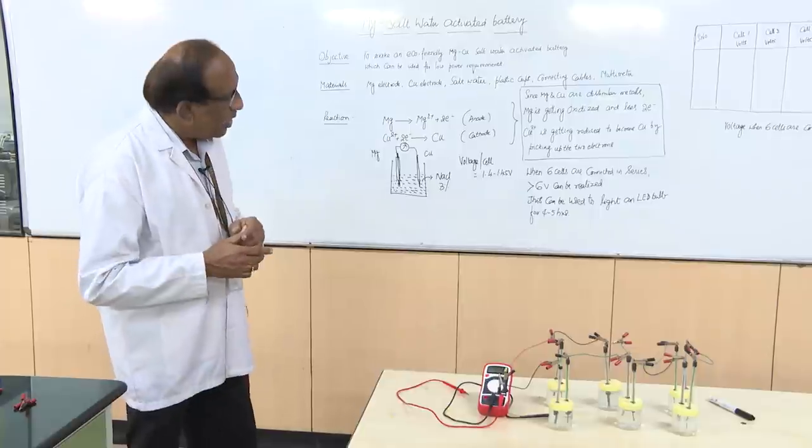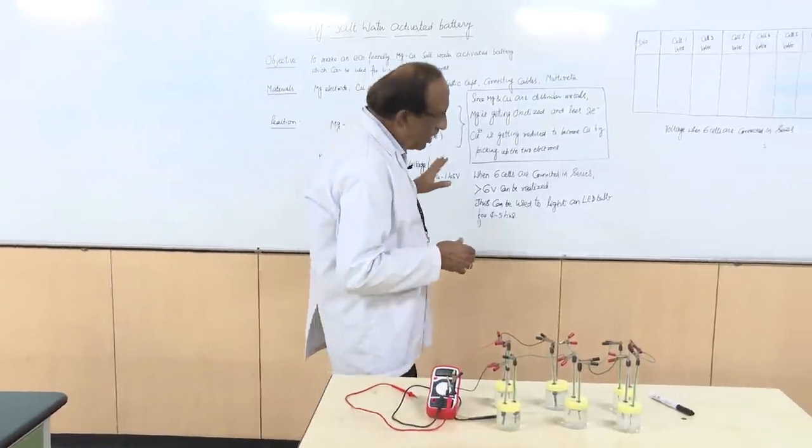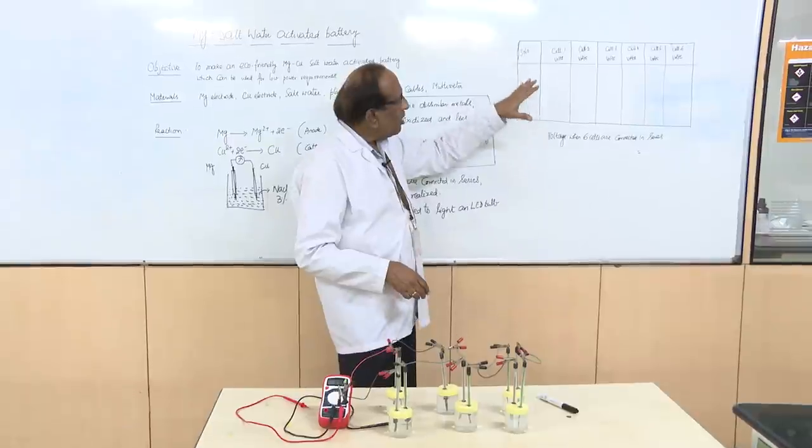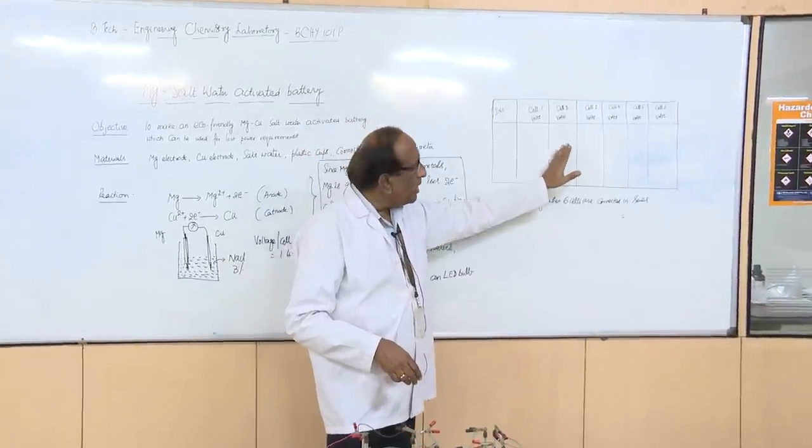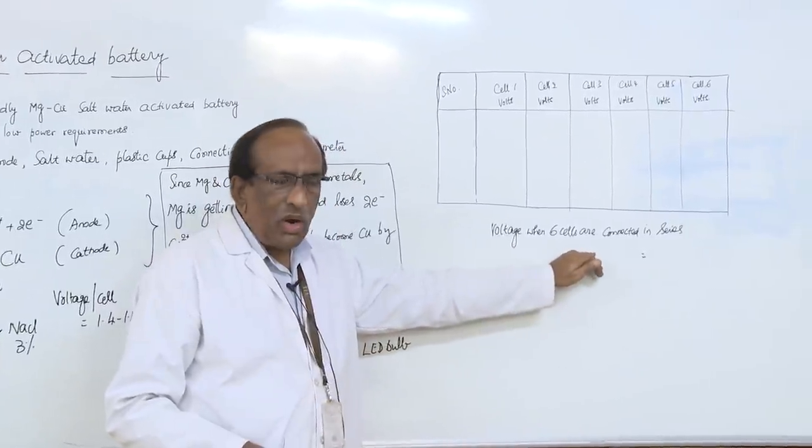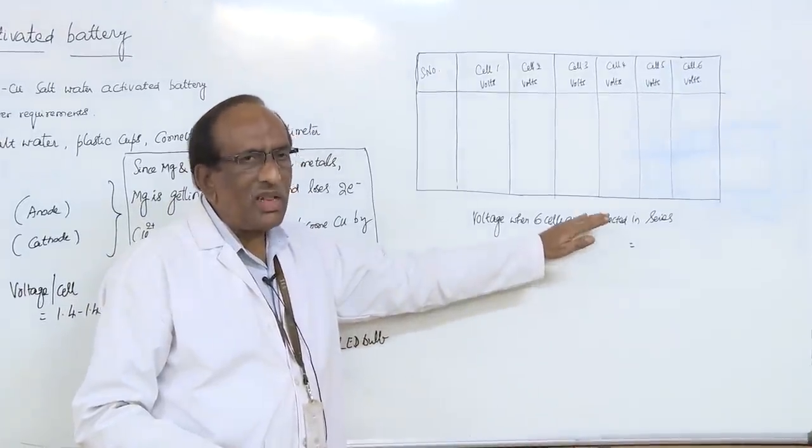Now what we are going to do is after we have done the experiment completely, we are going to use this table. We are going to write the voltage of each one of these cells and we are going to write the voltage of 6 cells when they are connected in series.